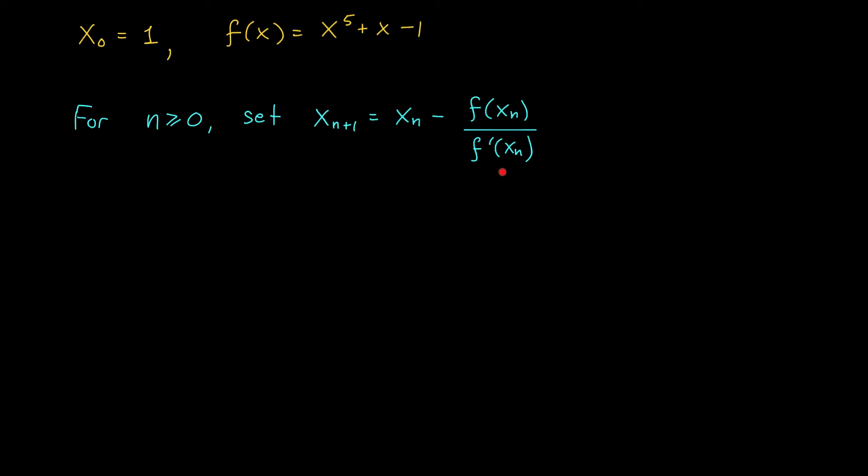Okay, so we're going to need a derivative here. Let's go ahead and calculate that. My function f of x has derivative f prime of x equals 5x to the 4 plus 1. With this in hand, we now have everything we need to compute our approximations.